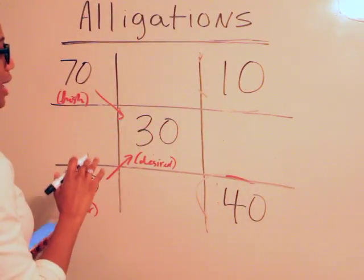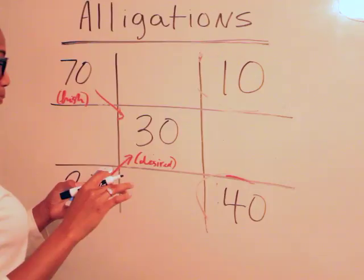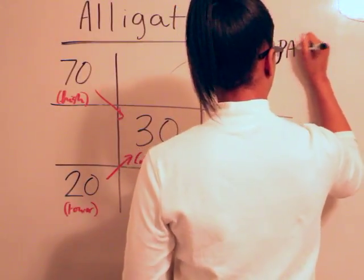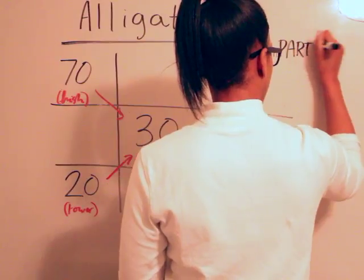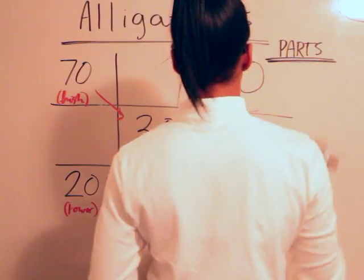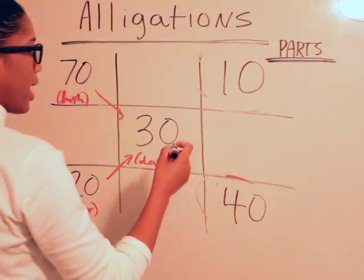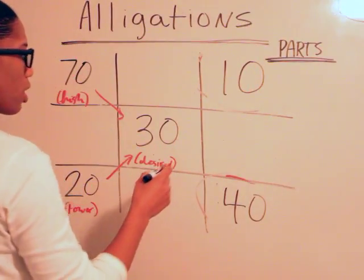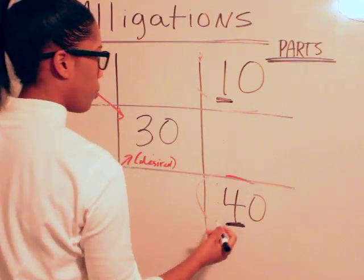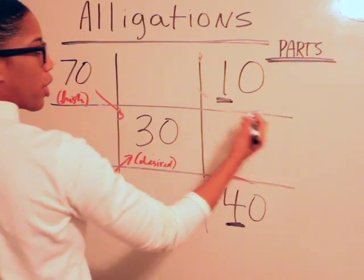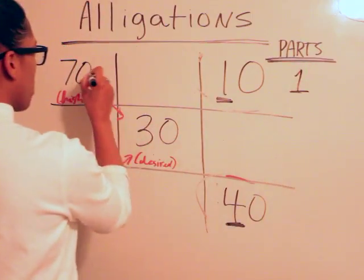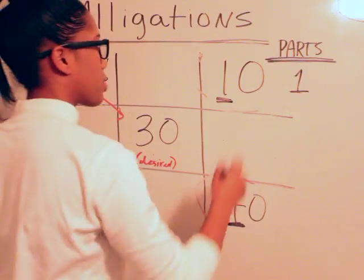Now we also know that we talked about the parts, so I'm just going to write parts here. Now we know that if we just base it off of this right here, the first digit, we know that one part, one of these parts is going to be the 70% elixir.